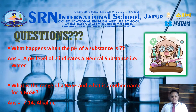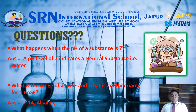If a substance has a pH value of exactly 7, it is regarded as a neutral substance — for example, water. Bases have a pH range from 7 to 14 and are called alkaline substances.